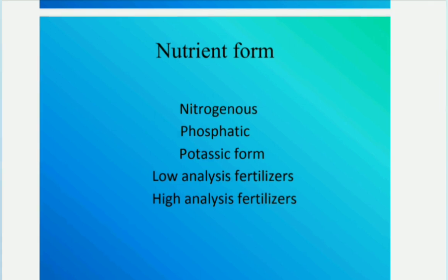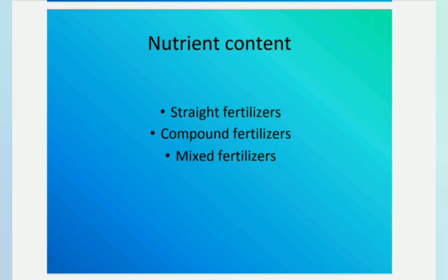Low analysis fertilizers have a nutrient content of less than 25% of primary nutrient. For example, SSP contains 16% phosphorus. High analysis fertilizers have a nutrient content of more than 25% of primary nutrient. For example, urea.